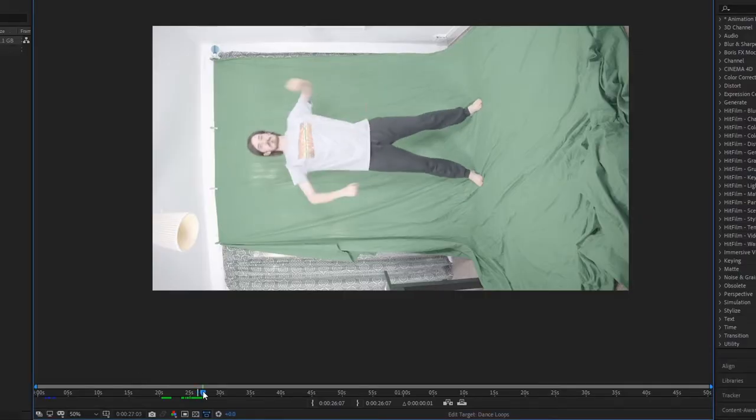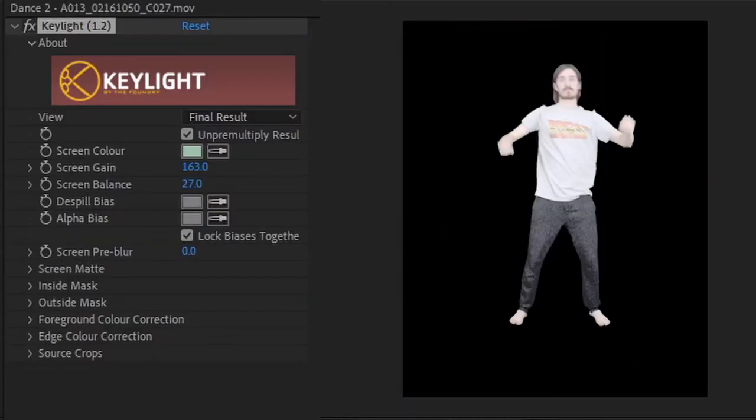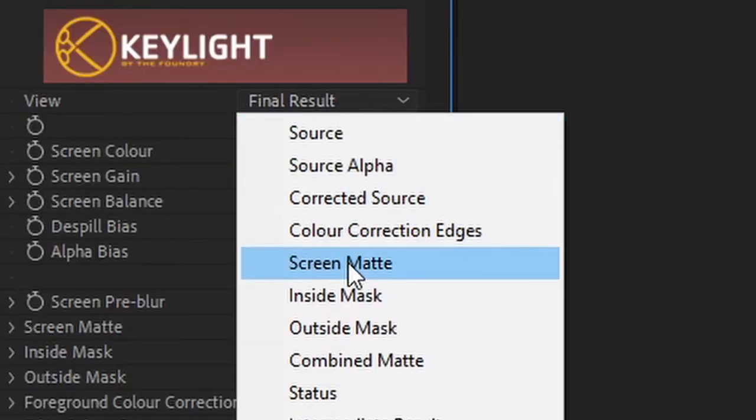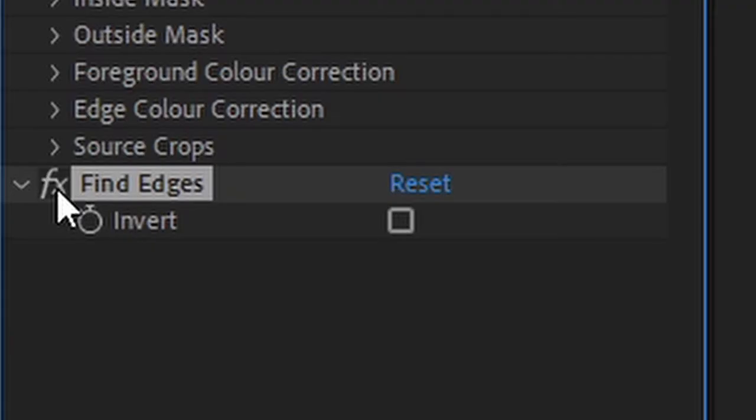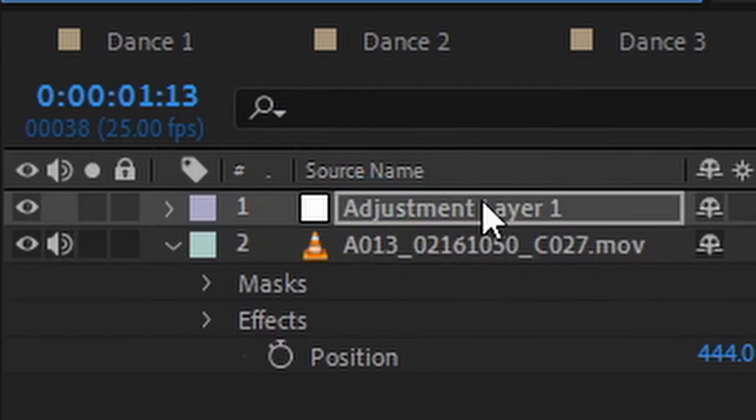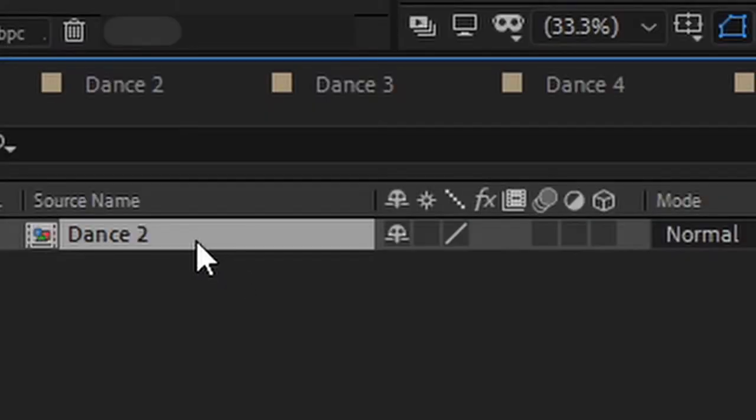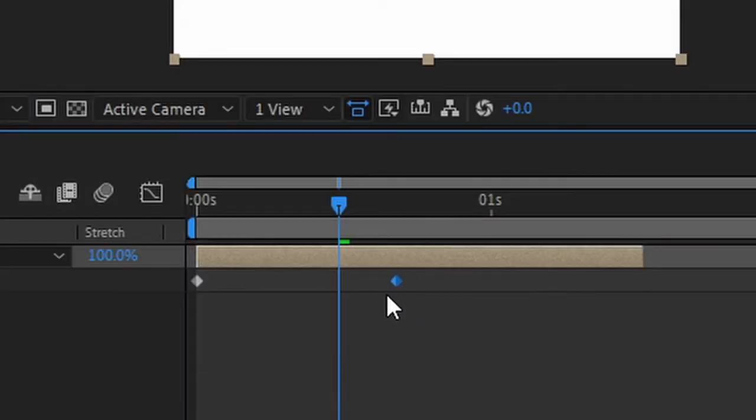In After Effects, I picked out the dance loops, keyed myself out, switched to screen mat view, then used the fine edges effect. I added an adjustment layer and inverted the colors. I finally used some time remapping to shorten the loops to 12 frames only.